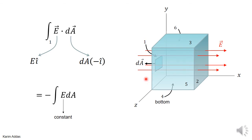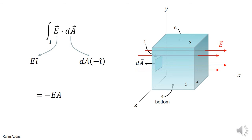In this particular problem the electric field is constant, so I can take it outside the integral. You get minus E times the integral of dA over surface one. The area of surface one is just A, so the electric flux through the left surface is minus E times A. The negative sign makes sense because whenever the electric field line goes into a closed surface, the contribution to the flux is negative — the angle between the area vector and electric field is 180 degrees.